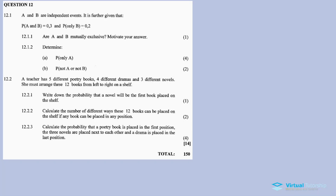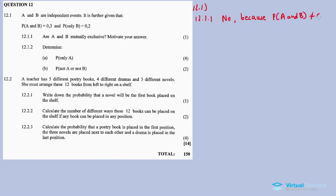12.1: A and B are independent events. It is further given that the probability of A and B is equal to 0.3, and the probability of only B is equal to 0.2. For 12.1.2.1: are A and B mutually exclusive? The answer is no, because the probability of A and B is not equal to zero.